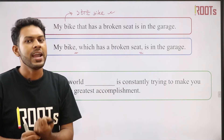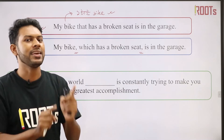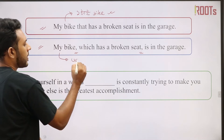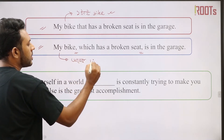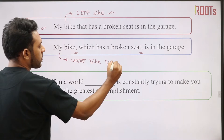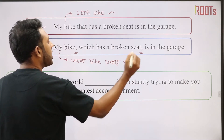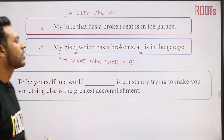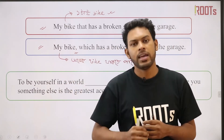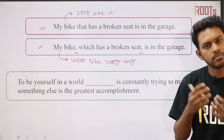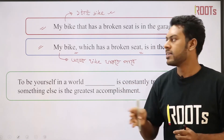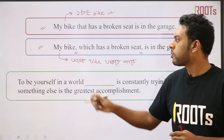In the first case, if I have many bikes, 'my bike that has a broken seat' defines which specific bike I am talking about. In the second case, 'my bike, which has a broken seat, is in the garage' — here I only have one bike, and I am giving extra information that it has a broken seat. Both sentences can be correct depending on context.